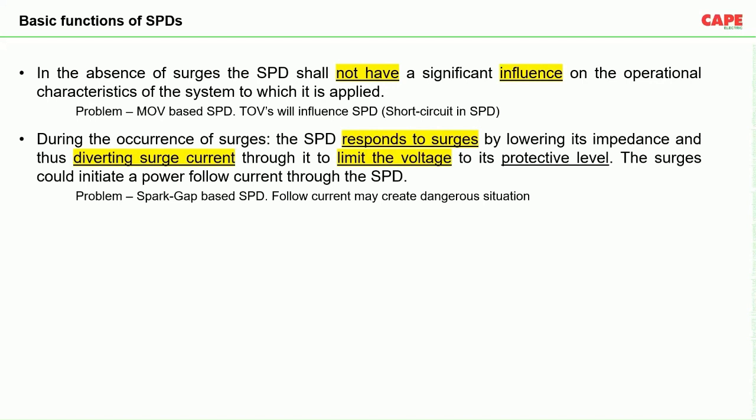The second basic function: during the occurrence of surges, the SPD shall respond by lowering its impedance and diverting the surge current through it to limit the voltage to its protective level. Once there is a surge, SPD immediately does two things: first, it creates equipotential by limiting the voltage to its voltage protection level; second, it diverts the surge current to earth or source, as applicable.